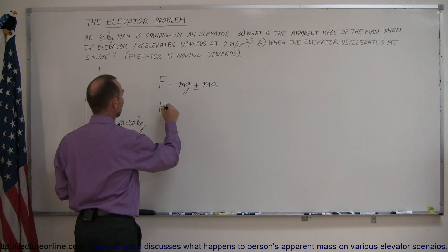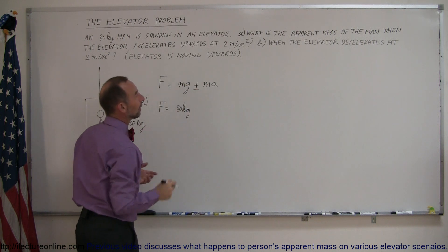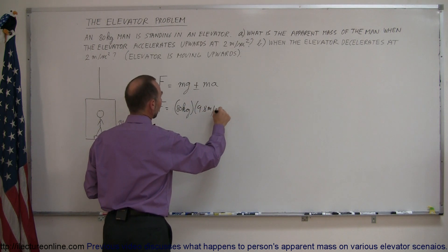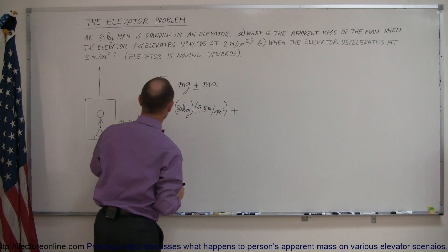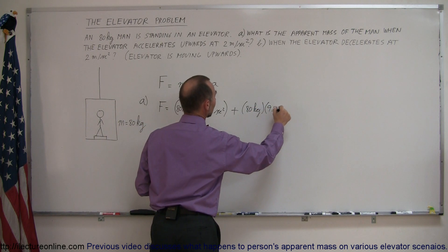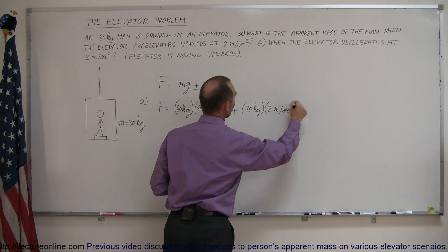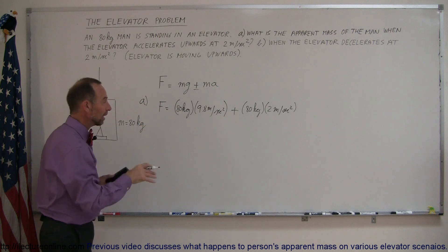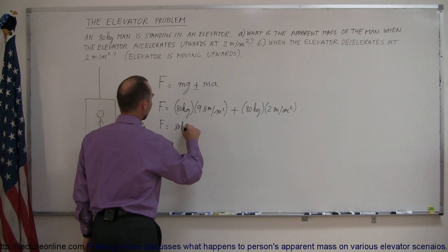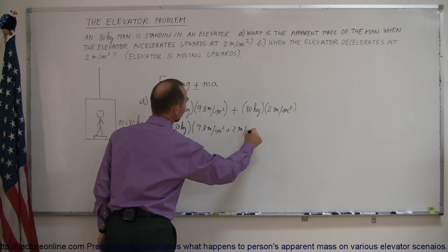The force on the man equals the mass of 80 kilograms. For part A, when the elevator is accelerating upward, it would be 80 kilograms times g, which is 9.8 meters per second squared, plus — because in part A it accelerates upward — 80 kilograms times 2 meters per second squared, which is the actual acceleration. That additional acceleration provides the extra weight pushing down on the scale.